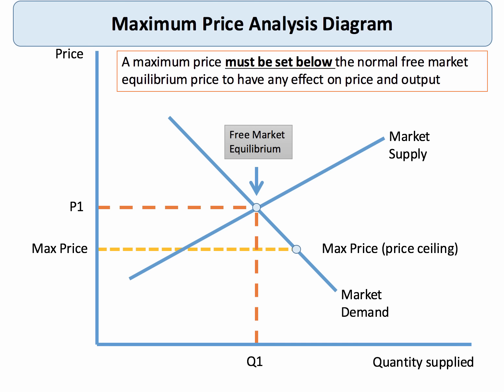This of course has consequences. One effect is that the price is now lower, which should cause an expansion along the demand curve to Q2 — consumers want to buy more. But producers have less of an incentive to supply at the maximum price, so we expect supply to contract from Q1 to Q3. As a result we've created excess demand in the market equal to the horizontal distance between Q2 and Q3. That's the basic economics of a maximum price.